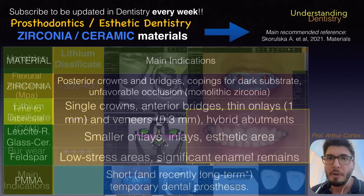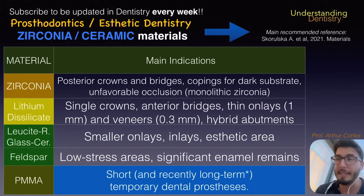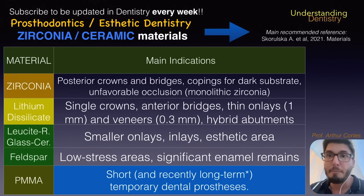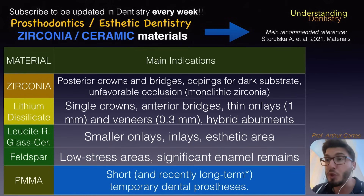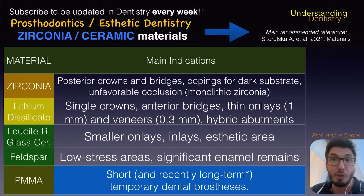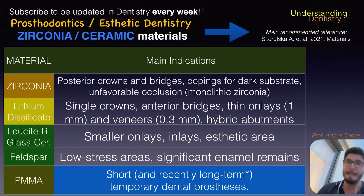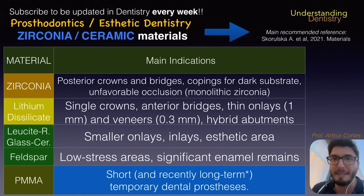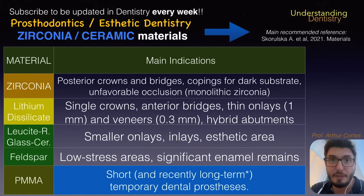For main indications: when you need mechanical resistance — posterior crowns and bridges, or copings for dark substrates — monolithic zirconia is indicated. Posterior bridges and cases with unfavorable occlusion especially benefit from zirconia because you need a lot of mechanical resistance. You'll try to adjust the occlusion as much as possible, but when the occlusion is not favorable, monolithic zirconia would be the most indicated material.